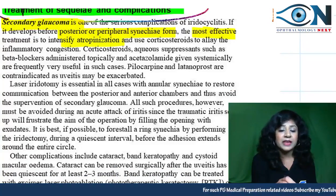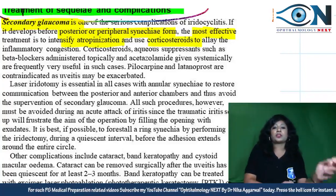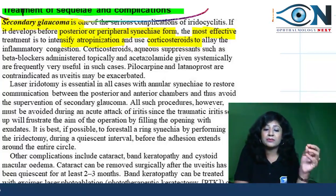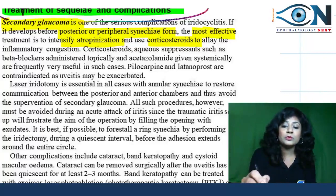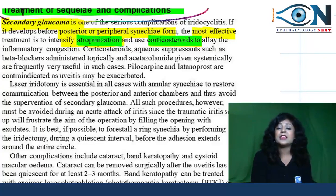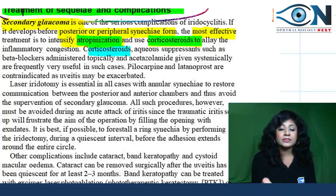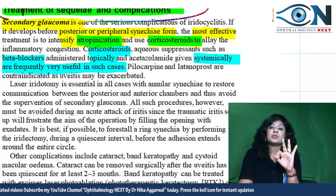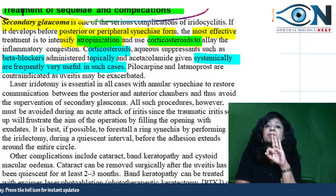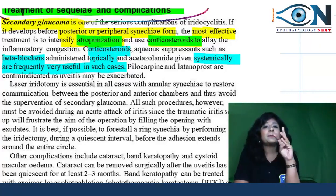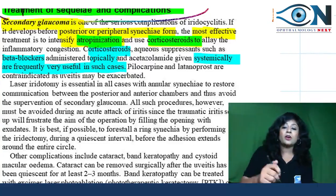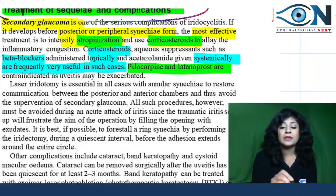If glaucoma develops before posterior or peripheral synechiae form, intensify atropinization and use corticosteroids to reduce inflammatory congestion. Give topical beta blockers as aqueous suppressants, and acetazolamide systemically. So the three topical treatments are: (1) mydriatics and cycloplegics, (2) steroids, and (3) beta blockers, with systemic acetazolamide if required.